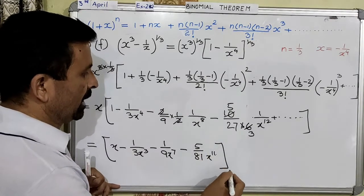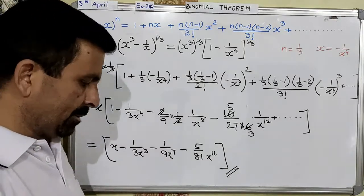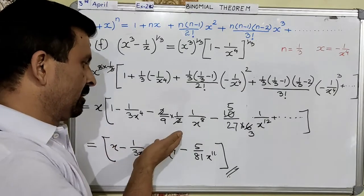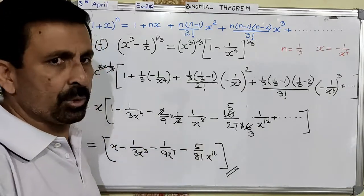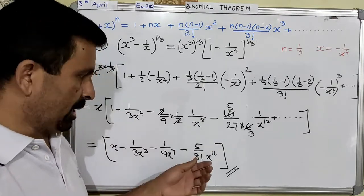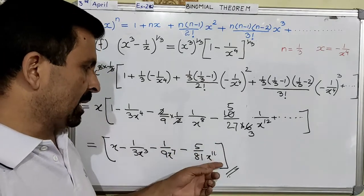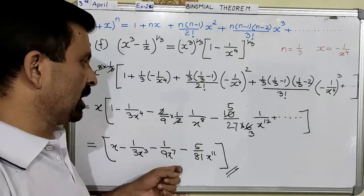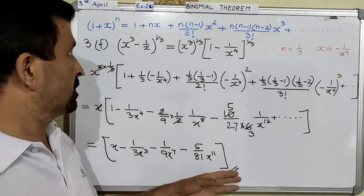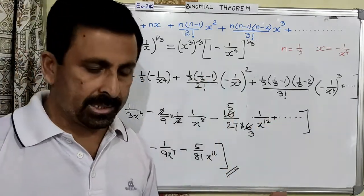This is your final answer. Here I would like to tell you: sometimes in the book you might see this answer taken in the numerator — it is up to you, it is not necessary. You can leave the answer in this form, or if you are taking it in the numerator also, it will be correct and you will get the same marks. Only the thing is, when you take this all in the numerator, the sign of all the powers will change. So this is your second example of this type for the negative index.